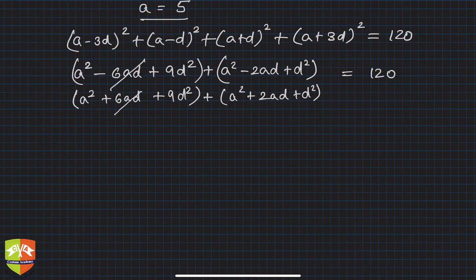Now you can see 6ad minus 6ad will go, 2ad and plus 2ad will go, so what's left is 4a squared and 20d squared, and this is 120.